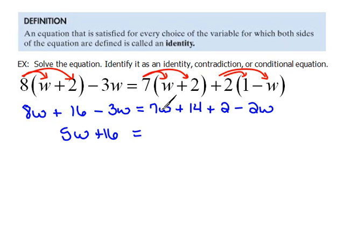On the right hand side, 7w minus 2w would be 5w. And 14 and positive 2 would be a positive 16. Look at this.